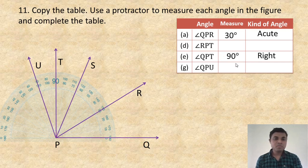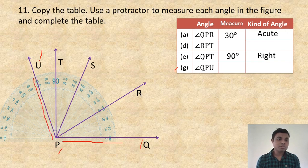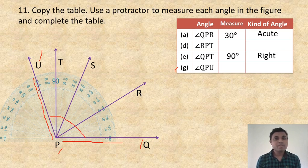Now angle QPU: here is Q, here is P, here is U — measure this angle. Place the protractor and count. In my picture it is 110 degrees. You measure from your own book — whatever angle you find, write that. It may not be the same. Write 110 degrees — that means it is an obtuse angle.